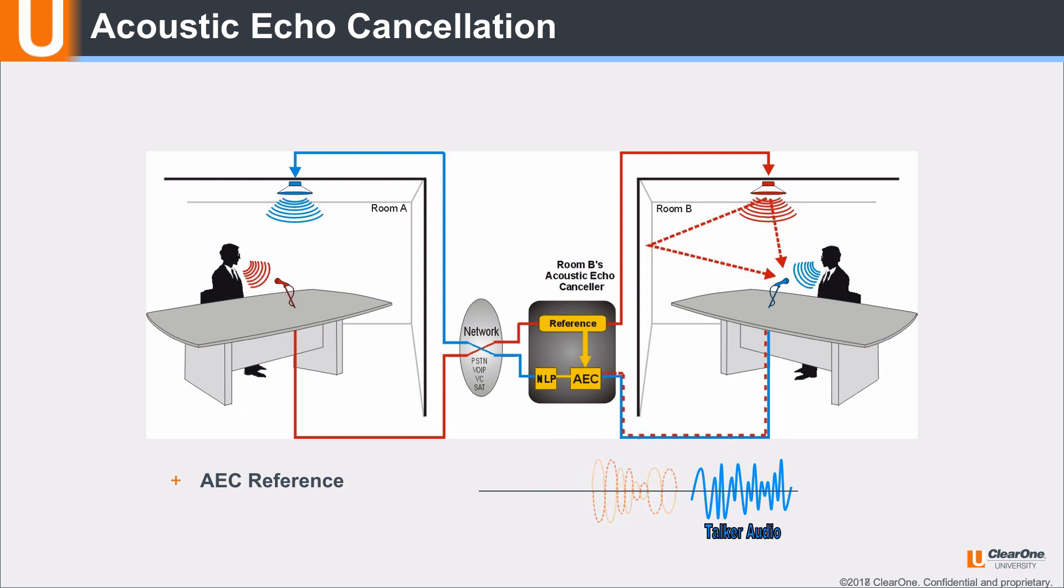Because the talker audio in room B was not part of the AEC reference, it passes through to room A. However, in the real world, the AEC reference does not match the returned echo exactly. There are differences because the echo is altered slightly by the room as frequencies interact with the surfaces in the room and each other, resulting in residual echo.